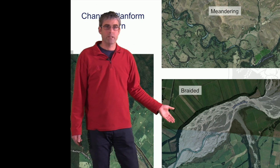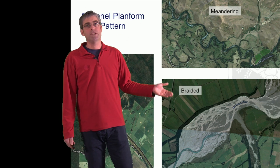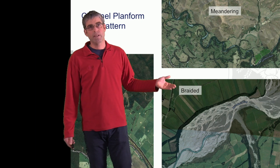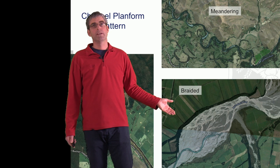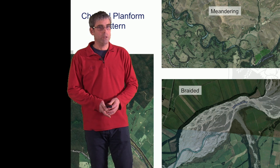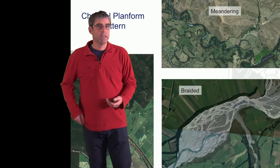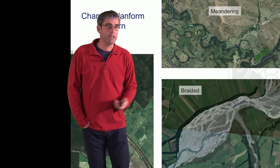It's hard to find braided river channels within Australia. They're generally found in rivers with a high sediment load, and Australian rivers generally have quite a low sediment load — at least a low bed load.